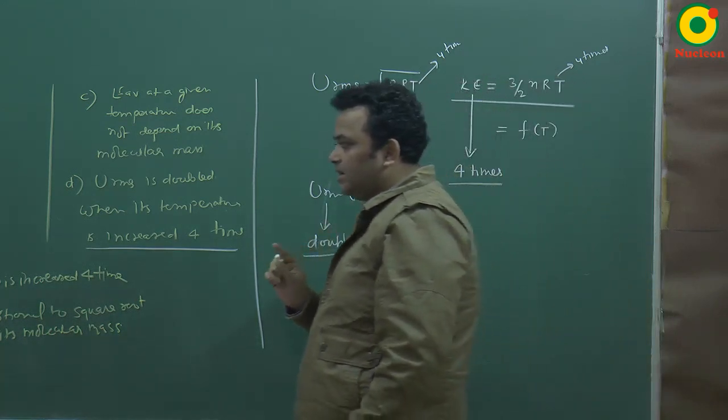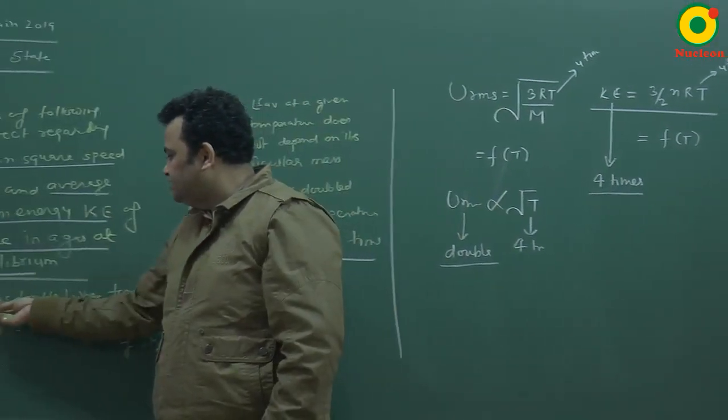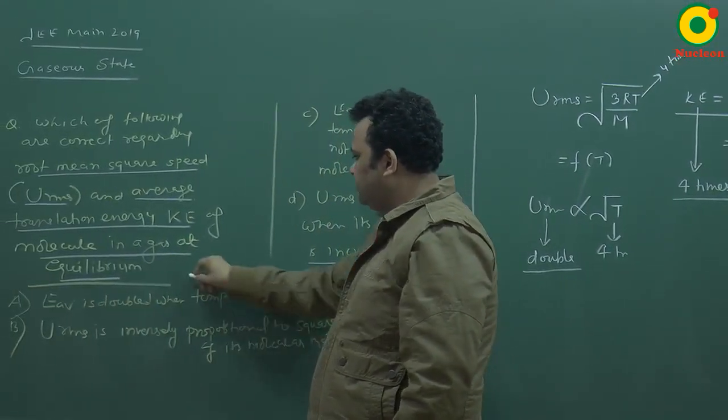So if I talk about this, then E average is doubled when temperature is increased 4 times. This is wrong.